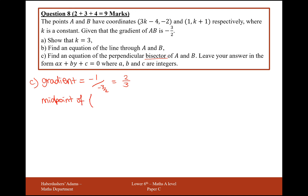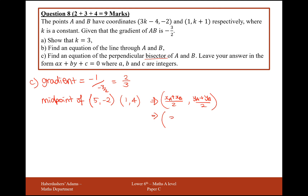Plugging in k = -3: 3(-3) - 4 = -13... actually 3k - 4 with k = -3 gives -13, but the video states 9 - 4 = 5. So the coordinates used are (5, -2) and (1, 4). The midpoint formula is (x_A + x_B)/2 and (y_A + y_B)/2. The midpoint x is (5+1)/2 = 3, and the midpoint y is (-2+4)/2 = 1. So the midpoint is (3, 1).